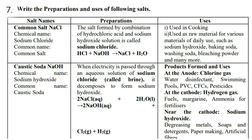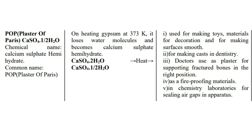Next question: write the preparations and uses of the following salts. Definitely one question from these salts will come in the examination — they may ask for the preparation, the uses, or the chemical name. For example, the chemical formula of bleaching powder is CaOCl₂ (calcium oxychloride). The chemical formula of plaster of Paris is CaSO₄·½H₂O — the half H₂O is pronounced as hemihydrate — so calcium sulphate hemihydrate is the chemical name of plaster of Paris.